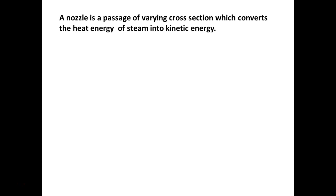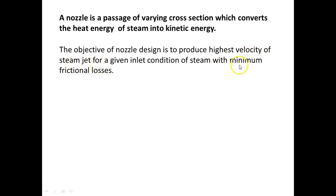The velocity is then used by the steam turbine rotor to produce mechanical energy. So the steam nozzle and the steam turbine work together to convert the heat energy of the steam into mechanical energy. In design, the main objective is to produce the highest velocity of the steam at the outlet for a given inlet condition with minimum frictional losses. You have to remember two objectives: highest outlet velocity and minimal frictional losses.